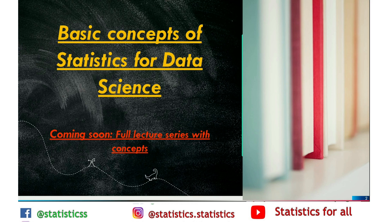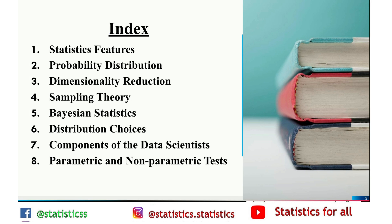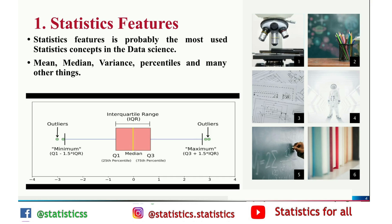You need to have a good command on statistics if you want to become a data scientist. With the help of statistics you can make predictions easy. Today we will focus on the main topics of statistics for data science. We will discuss all these topics in detail in our upcoming videos. We provide free e-notes for data science as well as statistics. Today we will discuss: statistics features, probability distribution, dimensionality reduction, sampling theory, Bayesian statistics, distributional choice, components of data scientist, and parametric and non-parametric tests.